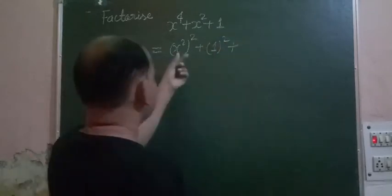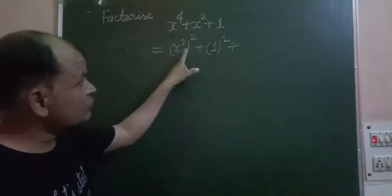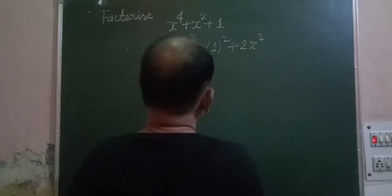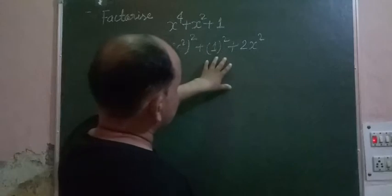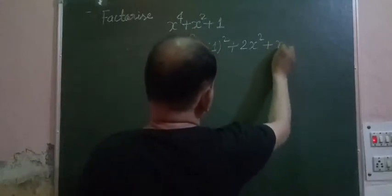We want to have here 2 times x squared plus 1 into 1, so 2x squared. There should be 2x squared for making it a complete square, and here is x squared also.